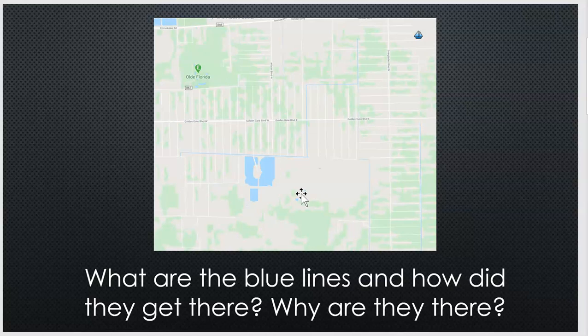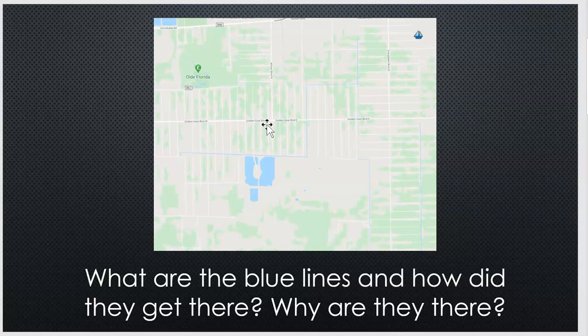Now you're going to notice that there are blue lines as well. This is a map of out in the Golden Gate Estates area, so I want you to think about what you know about that area and what you think those blue lines represent. And not only what do they represent but how did they get there? Are they man-made? Are they natural? And why are they there? What do you think about all that?